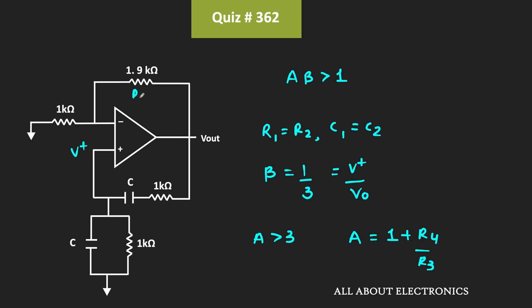This R₄ is equal to 1.9 kΩ and R₃ is equal to 1 kΩ. That means the gain is equal to 2.9.